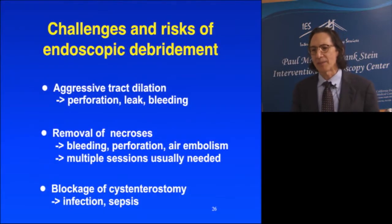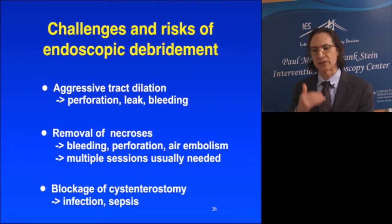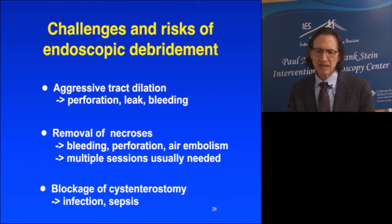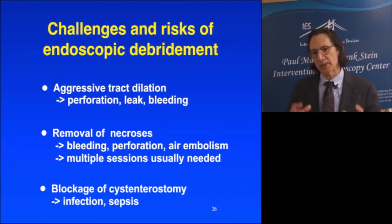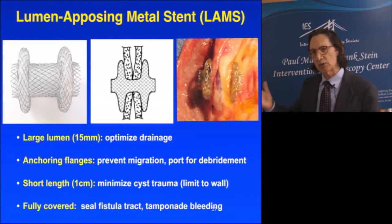This inspired me to develop the Axios stent. The challenges occur at three stages: aggressive tract dilation, which can cause perforation, leak, and bleeding; removal of necrosis, which can lead to bleeding, perforation, and air embolism; and multiple sessions often required. Additionally, the cyst enterostomy can close down over plastic stents — initially a large opening collapses, risking infection and sepsis. These challenges at each procedural stage inspired the development of the lumen-apposing metal stent, the Axios stent.